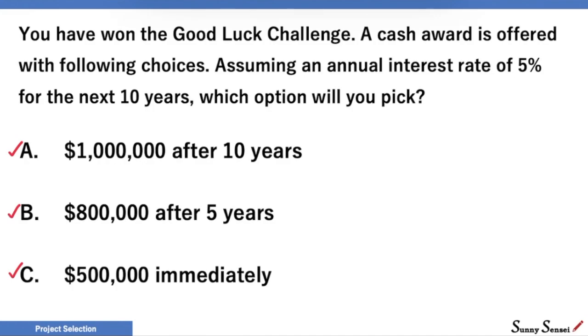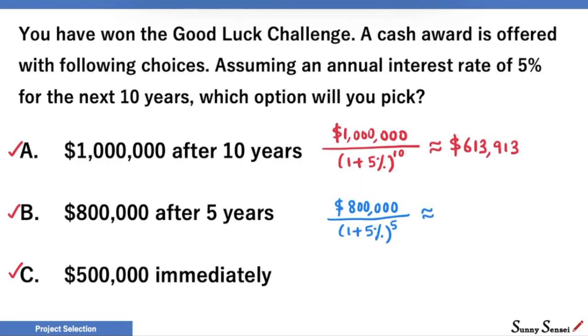Starting with A, present value of $1 million after 10 years is $613,913. This is rounded to the nearest integer. Similarly, for B, we have present value of $626,821. Finally, for C, present value is $500k itself. Clearly, your choice should be B. We have the largest present value for this choice.